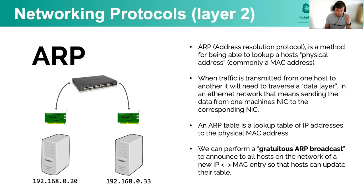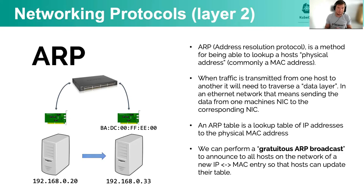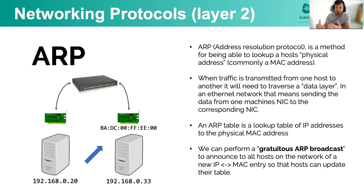ARP allows a node on the network to effectively broadcast and update the network so that the network knows to send traffic to it when wanting to send traffic to a particular IP address. When a node comes up for the first time and wants to tell the network that its IP address is linked to a particular MAC address — a hardware address built into the network card — it can broadcast to the network that to get to this IP address, send layer two traffic to this MAC address. So it effectively updates the network with IP address to MAC address mappings. When we have a leader election, we then do that layer two update so the network knows where traffic should actually go.